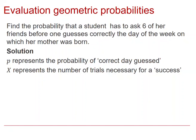Looking at an example — a scenario from the previous video — we are finding the probability that a student has to ask six friends before one guesses correctly a particular day of the week. In our solution, we identify the parameter: P, the probability of a success, is one in seven, or one seventh.